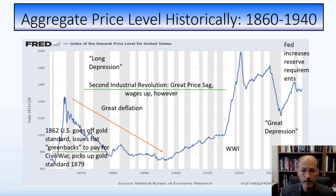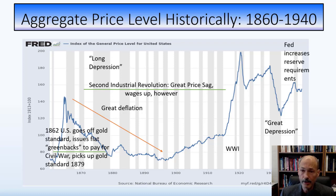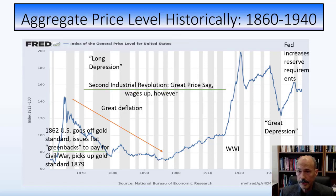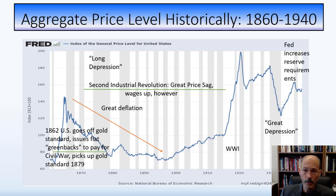Going back to the graph, we see a great sag during the second industrial revolution — wages up, but prices sagging. Then right around World War I, we see a tremendous increase in the price level — again, increasing the money supply and prices going up to pay for the war. Then we see the Great Depression and a few more gray bars. Nobody knew what to do from a financial markets and institutions perspective in the 1800s or early 1900s. Nobody knew.